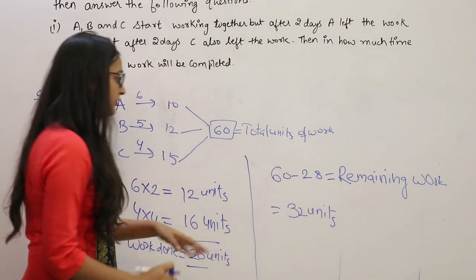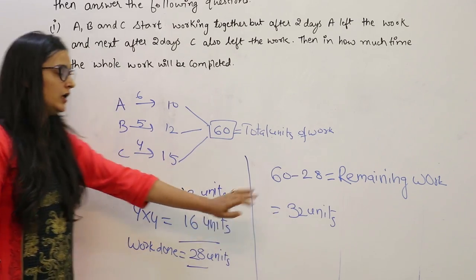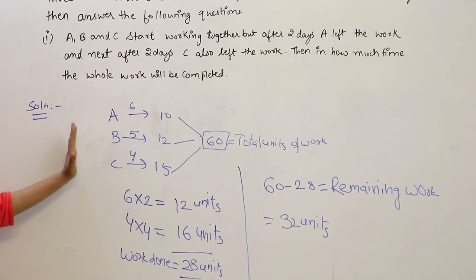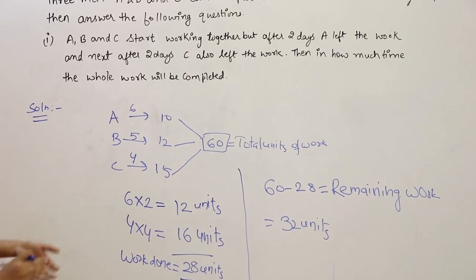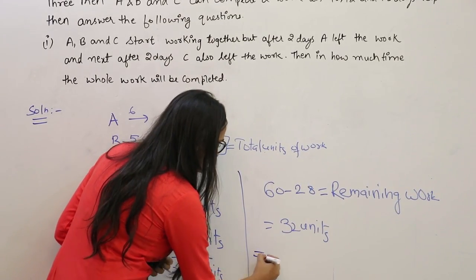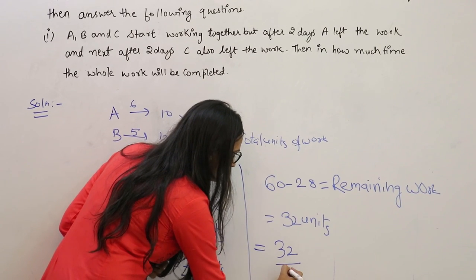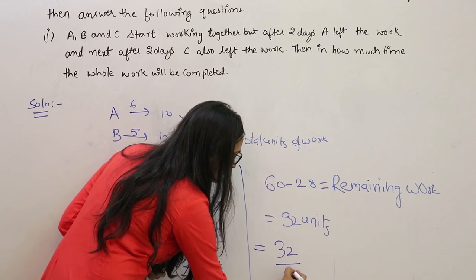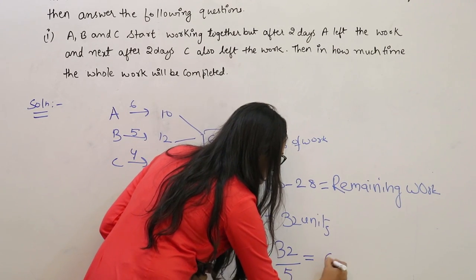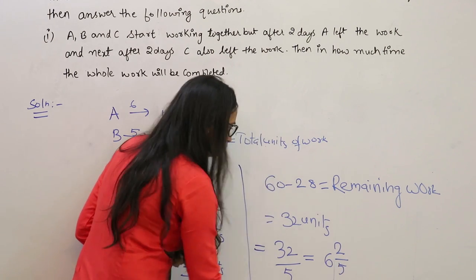अब यह जो 32 units काम बचे, यह कौन करेगा? यह करेगा B, क्योंकि B ने तो हर रोज काम किया है. So this work is done by B alone. Divide this work with the efficiency of B, we get the number of days in which the remaining work is completed.